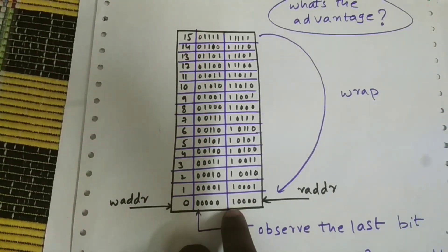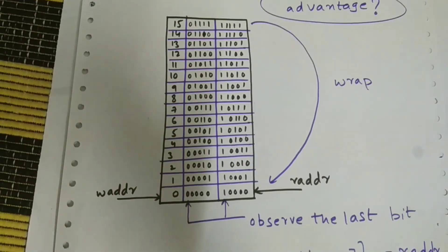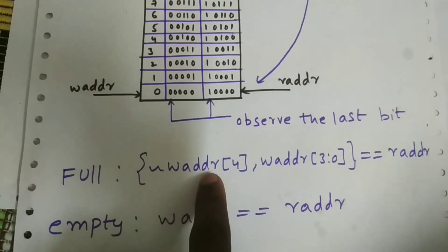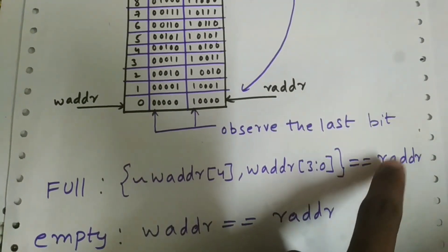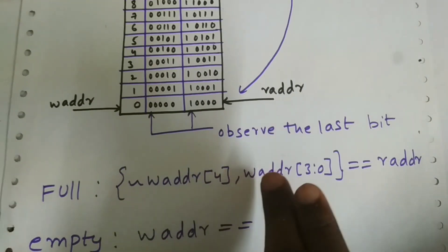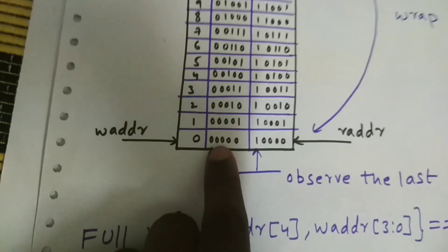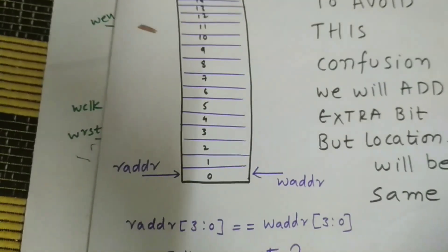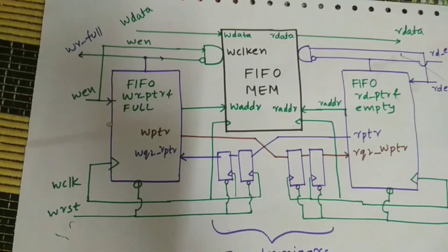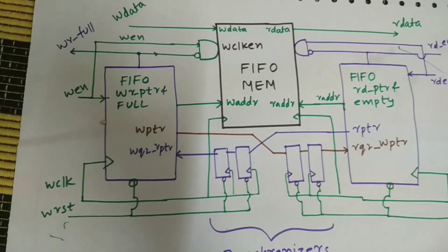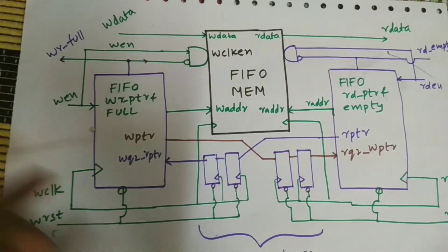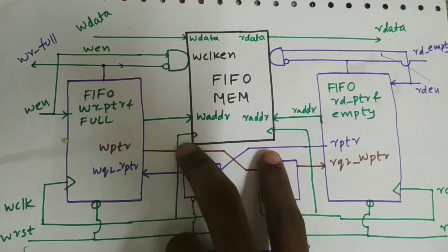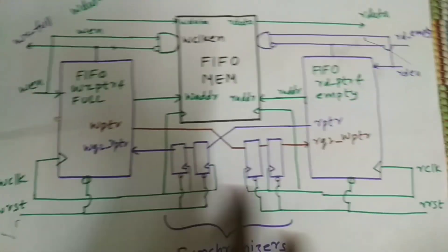Now let's look at the full block diagram — it's not complicated, I'll clearly explain it. We have three blocks: the write module, the read module, and the memory. The memory has two clocks — write clock and read clock — along with write reset, read reset, write enable, and read enable. The write module contains a binary-to-gray converter that generates the write pointer, which is passed through synchronizers to get the write pointer in the read clock domain.